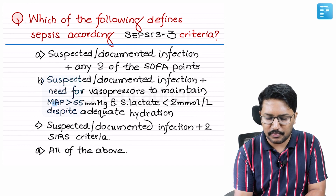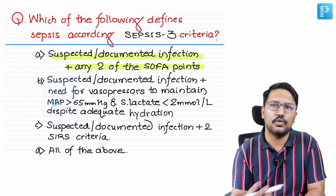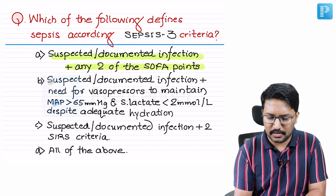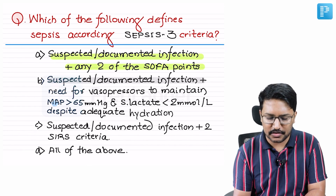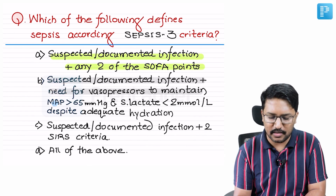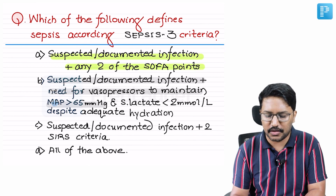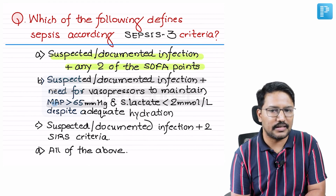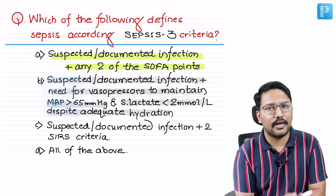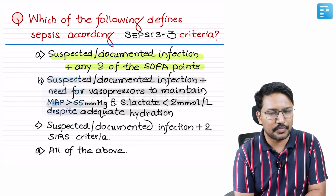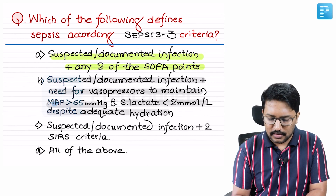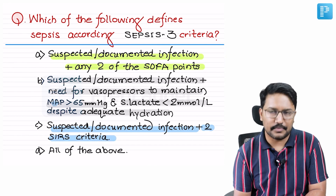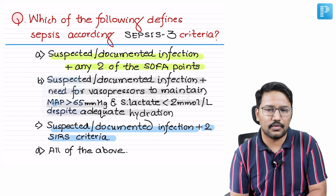Option one is suspected or documented infection plus two SOFA points. Option two is suspected or documented infection plus need for vasopressors to maintain mean arterial pressure of more than 65 mmHg and serum lactate under two millimoles per liter despite adequate hydration. Option three is suspected or documented infection plus two SIRS criteria. The last option is all of the above.